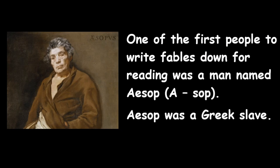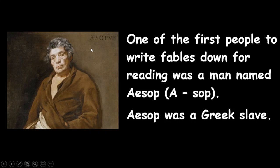One of the first people to write fables down for reading was a man named Aesop — you pronounce that like 'A' and 'Sop'. Aesop was a Greek slave. This is a painting by an artist in the 1600s of what he believed Aesop looked like, and this is actually how you spell the name Aesop in Greek.